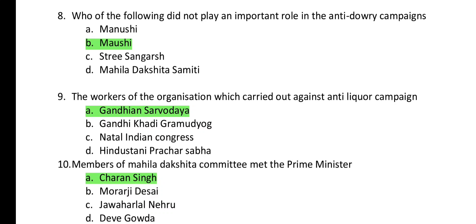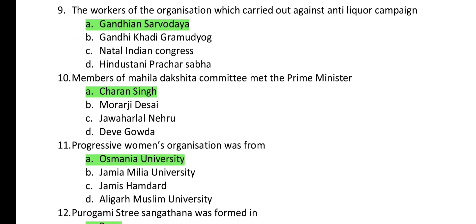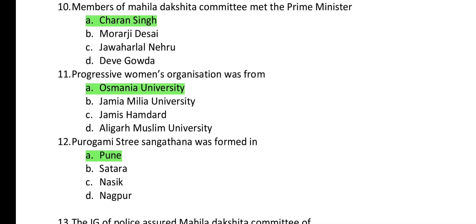Question 8: Who did not play an important role in the anti-dowry campaign? That is B — Mousy. Question 9: The workers of which organization carried out the anti-liquor campaign? It is A — Gandhiyan Sarvodaya. Question 10: Members of Maila Dakchita Committee met which Prime Minister? The answer is A — Chaudhuri Charan Singh.